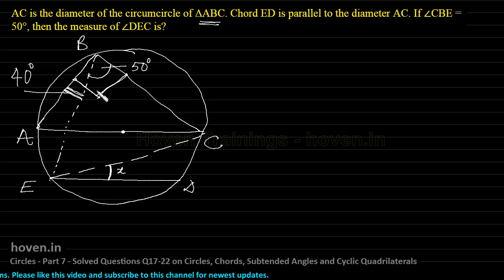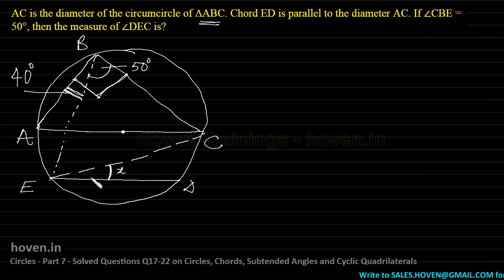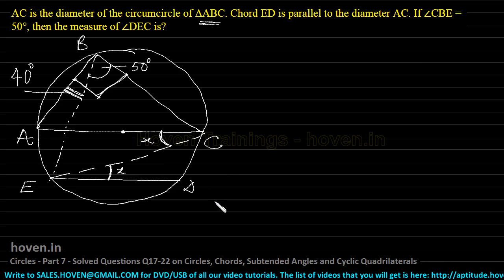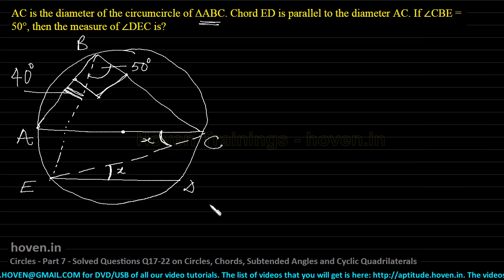The entire ABC is 90 degrees, out of which 50 has been given, and we deduced the remaining part should be 40. The second fact: chord ED is parallel to diameter AC. If this angle is X, then EC can be seen as a transversal, and therefore this angle will also be X. We are deducing everything logically. All the concepts of geometry, whether parallel lines or angles in a semicircle, are being used.